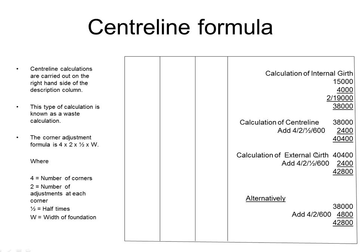If we wanted to get to the external girth, we can add the centre line calculation again — the 2,400 — to give us the external girth. Alternatively, if we want to jump directly from the internal to the external, we use four times two times w, which brings us through the full width of the medium.